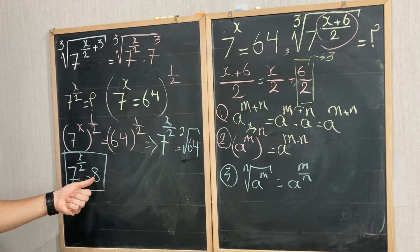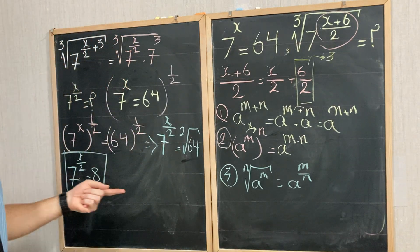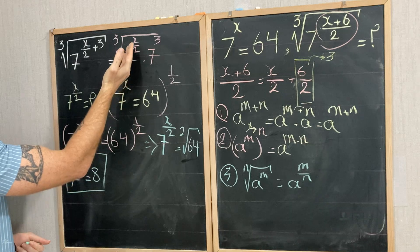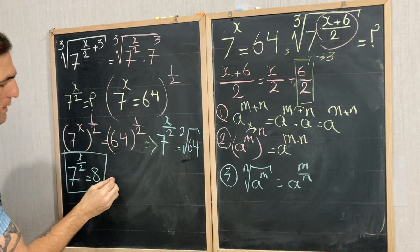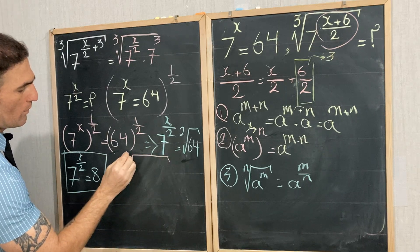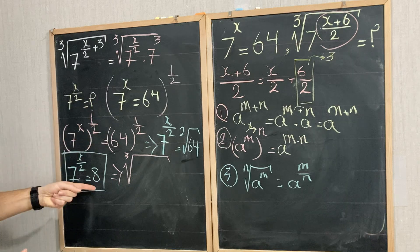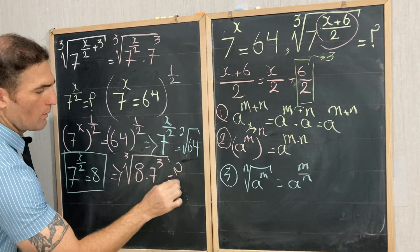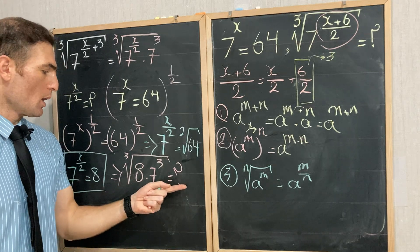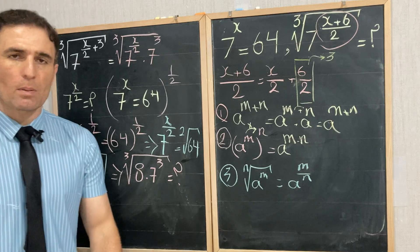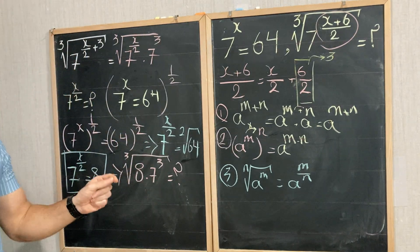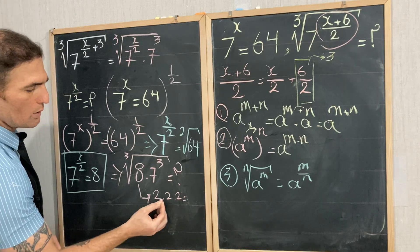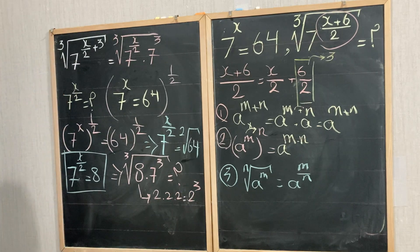Now we substitute into our expression. The expression is the cube root of 7 to the power of x over 2 times 7 to the power of 3. Replacing 7 to the power of x over 2 with 8, we get the cube root of 8 times 7 to the power of 3. To make it easier, I'll write 8 as 2 to the power of 3.